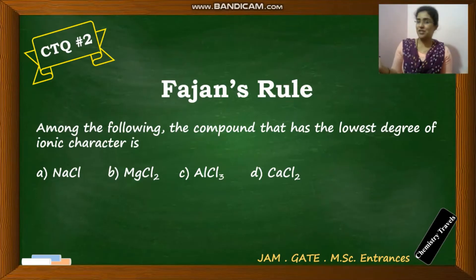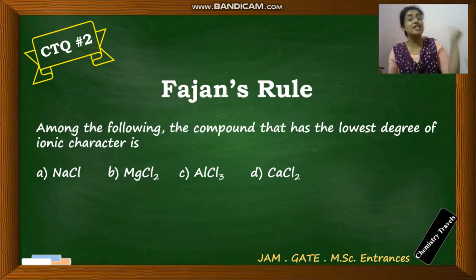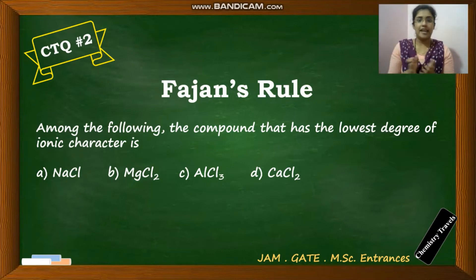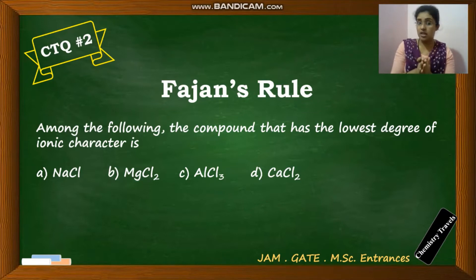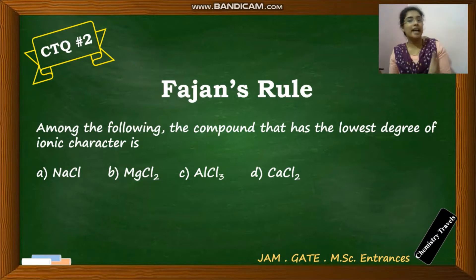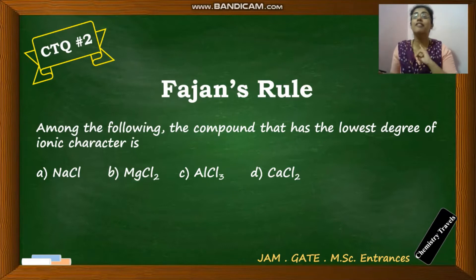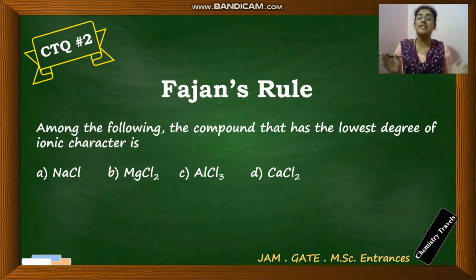Hi friends, welcome back to the channel. In this video let's do question 2 from the CTQ series. This question is taken from JAM 2016 paper. The question says: among the following compounds, the one that has the lowest degree of ionic character — is it NaCl, magnesium chloride, aluminum chloride, or calcium chloride? Through this question, let's learn the concept of Fajans' rule, where we study polar covalent bonds and percent ionic character.